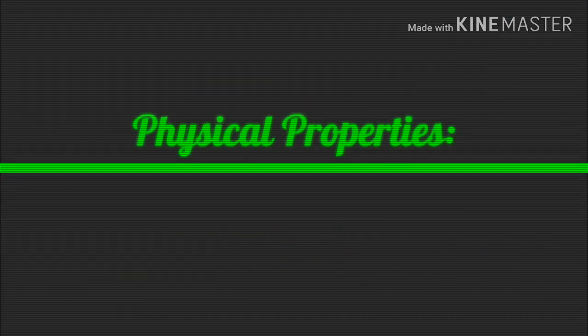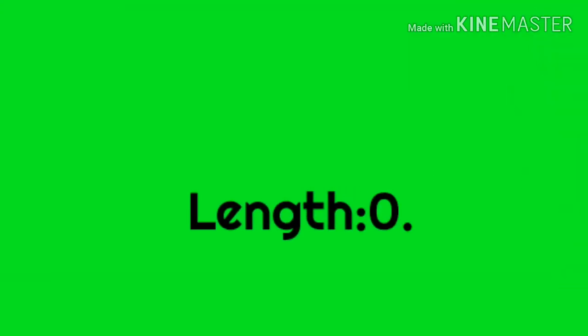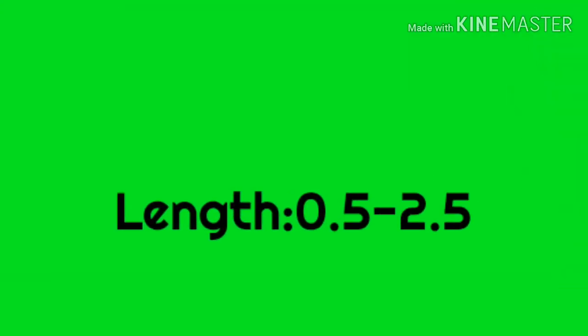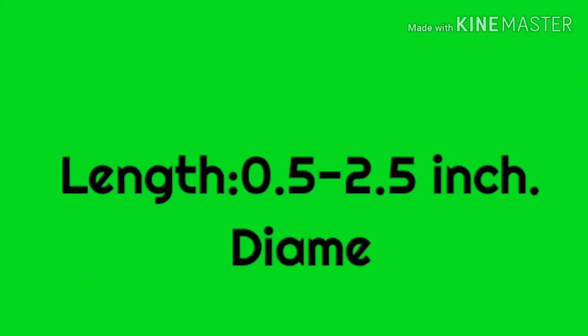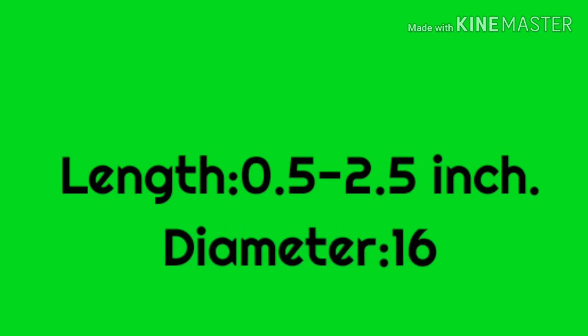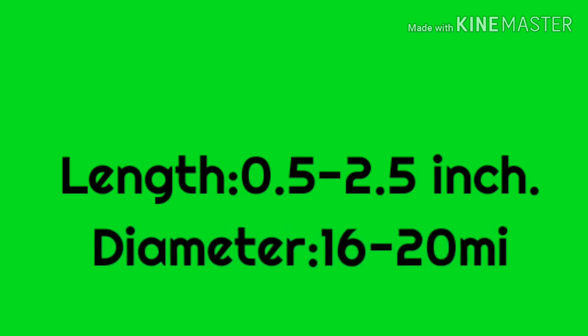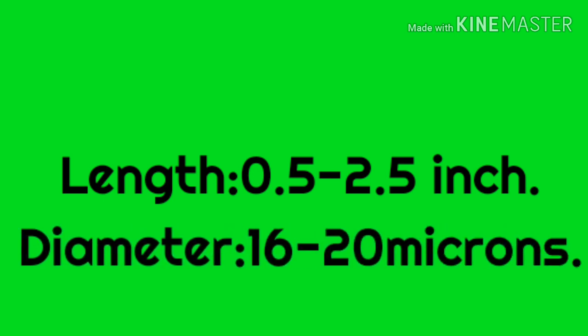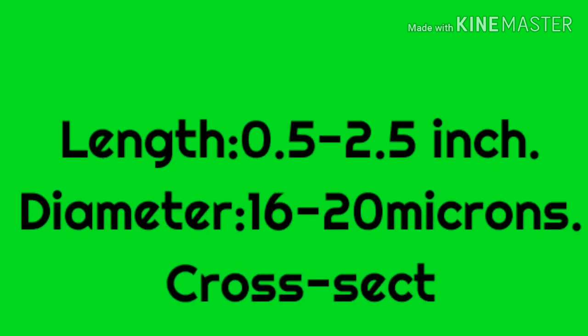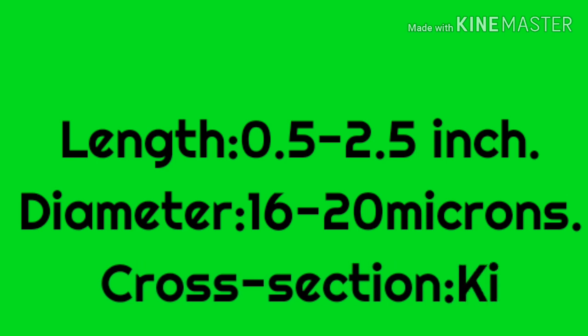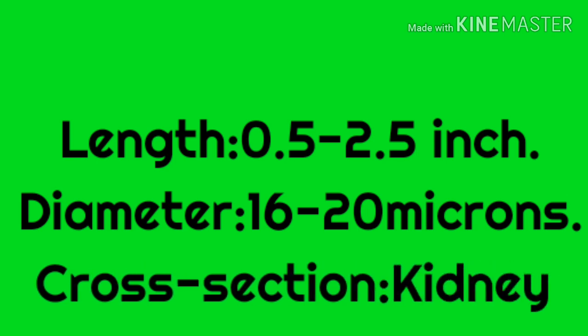First of all, physical properties. Length. We know cotton fiber comes in various types. Different types of cotton fiber have different lengths. Generally, cotton fiber length ranges from 0.5 to 2.5 inches.